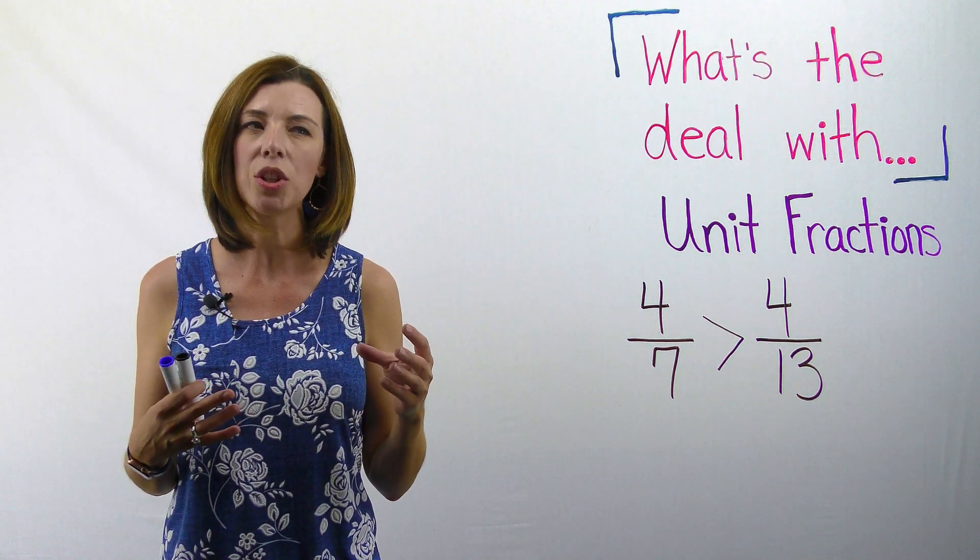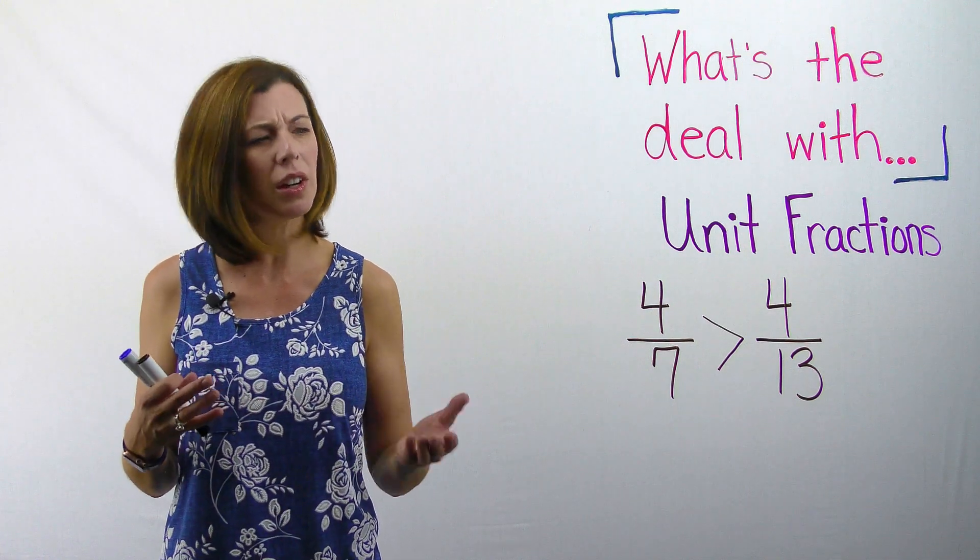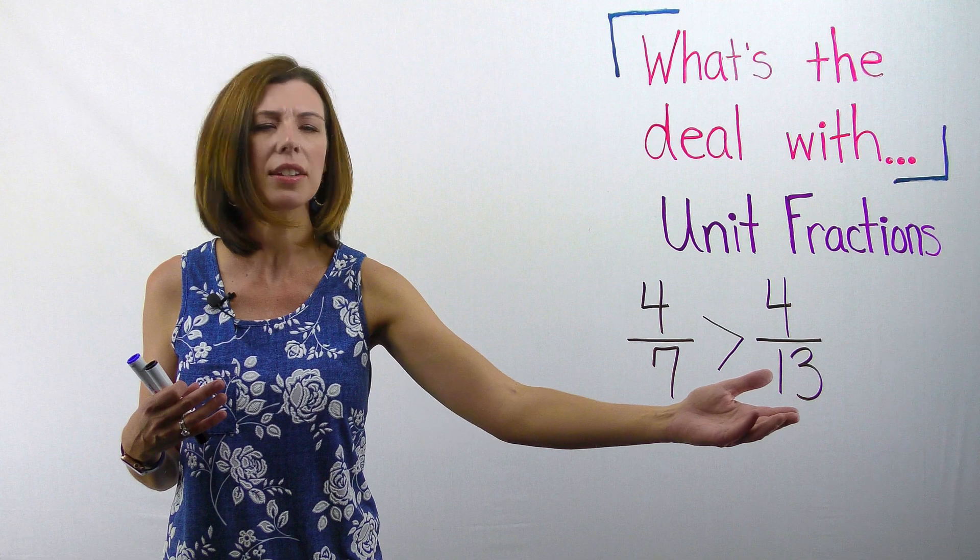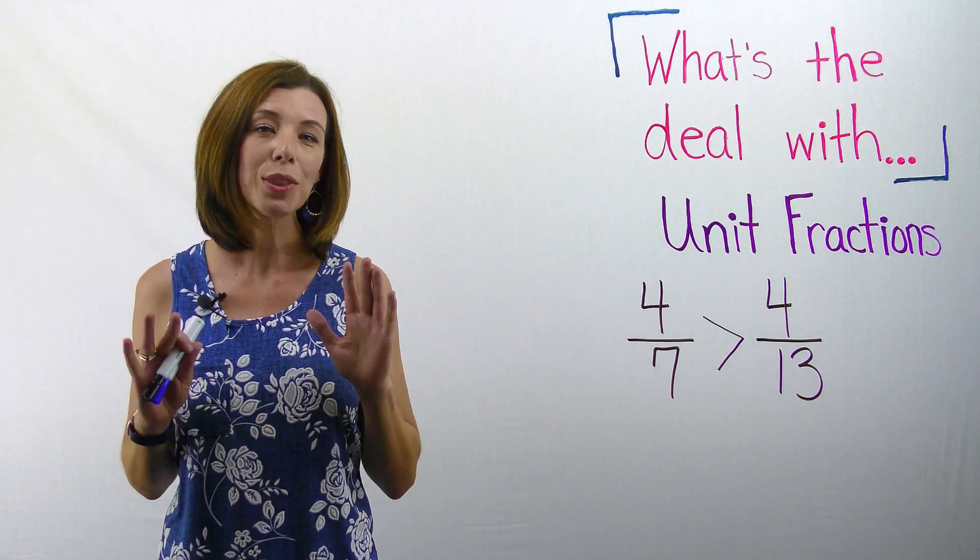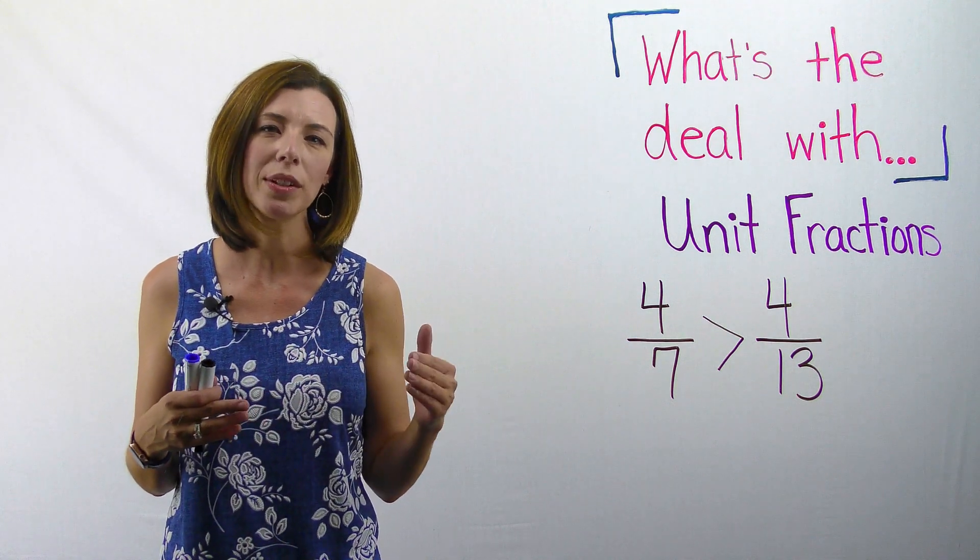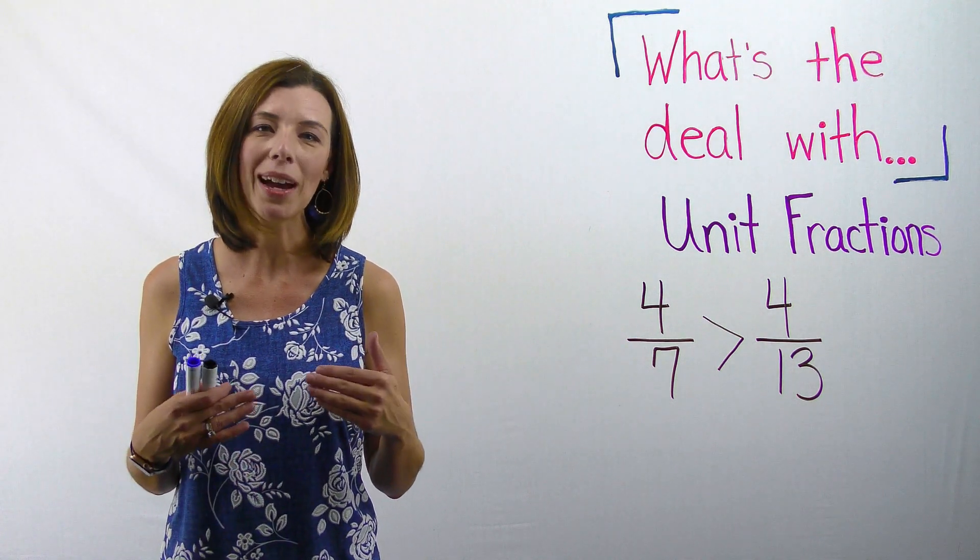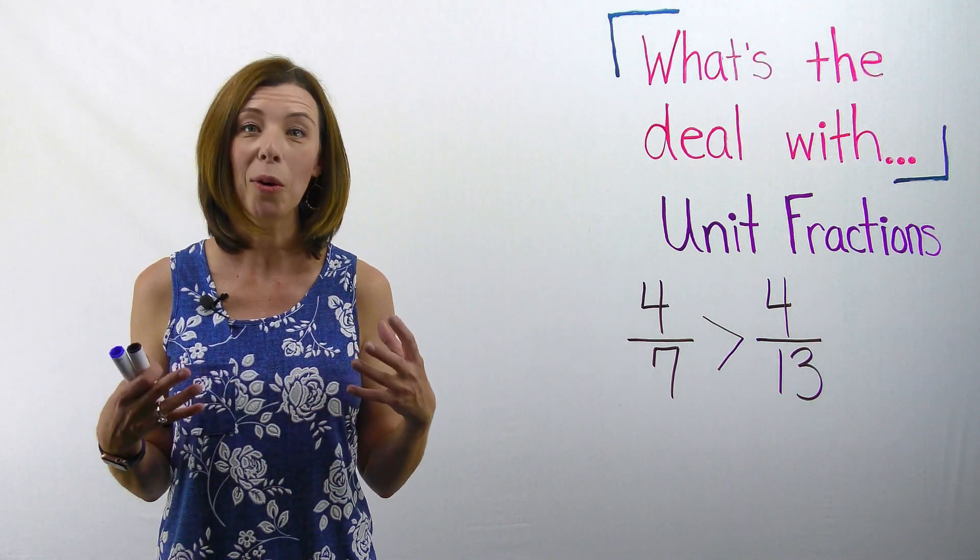And so then it starts getting confusing as to how much of the whole is this fraction and which one's larger? Is this fraction that has the denominator of 13 larger than the seventh? And it gets confusing. The beauty of unit fractions is when I talk about four copies of one seventh, notice that I'm going back to whole numbers.